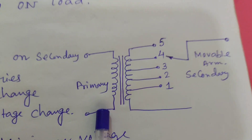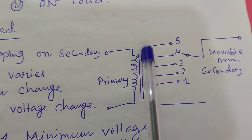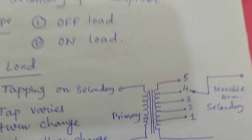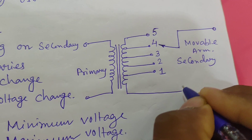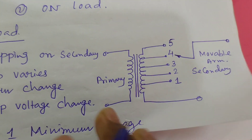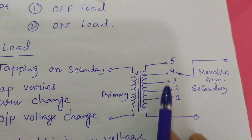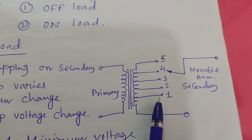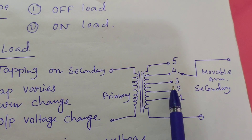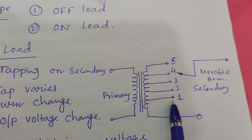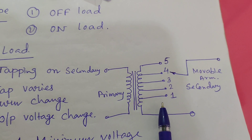Here we have drawn a picture to understand. This is the primary winding of the transformer and this is the secondary winding. The tapping is situated at the secondary of the transformer. The taps are numbered 5, 4, 3, 2, 1 — these are the tapping points on the secondary for our benefit.